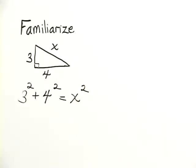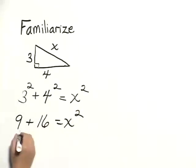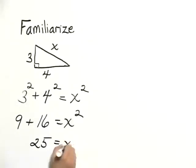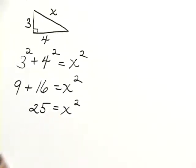Now we can move to the third step, which is to carry out. In this case, we want to solve for x. We have 3 squared, which is 9, 4 squared, which is 16, that equals x squared. 9 plus 16 is 25. Now this is a quadratic equation.